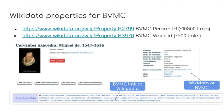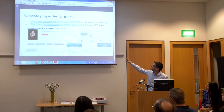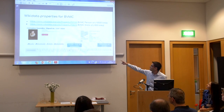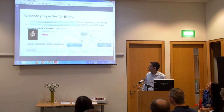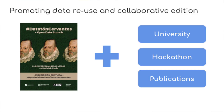These are the properties that link both repositories. The first image shows how the information is enriching our repository, and the last one shows how Wikipedia displays a link to our repository and how we are promoting data reuse.